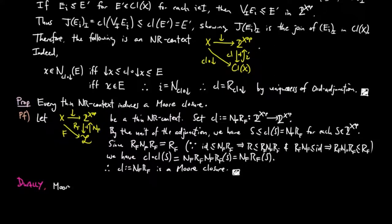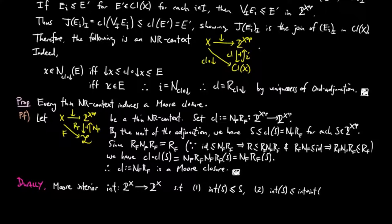Dually, an endomorphism on the upward closed subsets of x is a Moore interior operator, provided: one, the interior of s is less than or equal to s, and two, the interior of s is less than or equal to the interior of the interior of s. We may dualize the arguments above to show that every interior operator is induced by, and induces, the adjunctions of the opposite of an NR context.